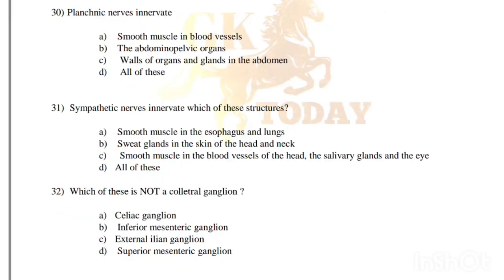Splanchnic nerves innervate smooth muscles in blood vessels, the abdominal pelvic organs, walls of organs and glands in the abdomen — correct answer is option D, all of these. Sympathetic nerves innervate smooth muscles in the esophagus and lungs, sweat glands in the skin and head and neck, smooth muscles in blood vessels of head, salivary glands and the eye — correct answer is option D, all of these.